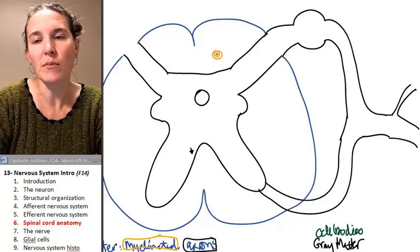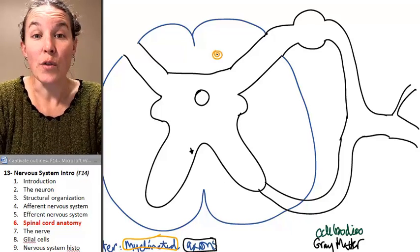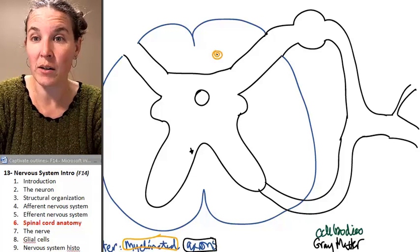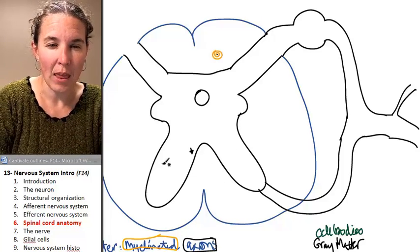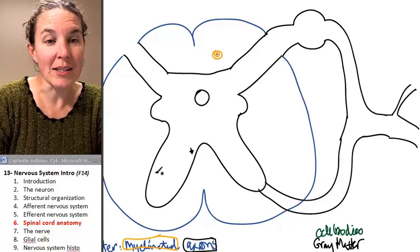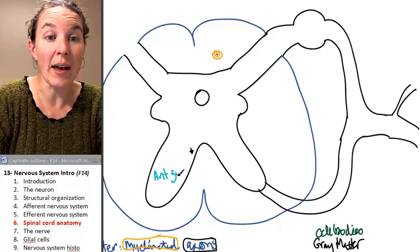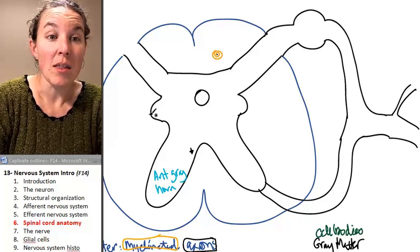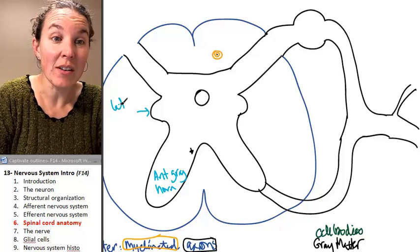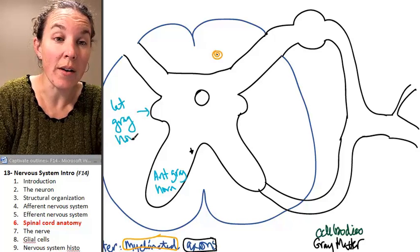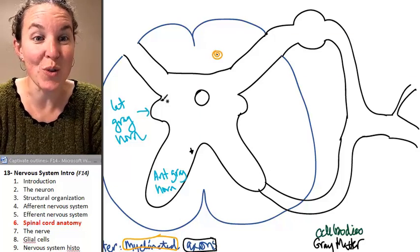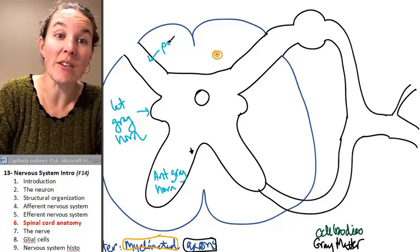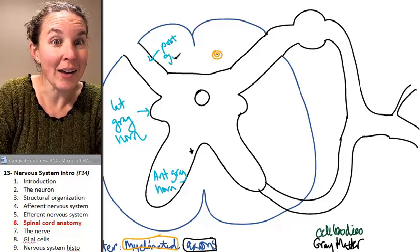Let's label our parts. And then we'll kind of orient ourselves. Let's look at what's going on with the gray matter. I'm going to label them on this side. What a great idea. This is the anterior gray horn. It looks like a horn, doesn't it, or a butterfly wing? This is the lateral gray horn. Some sections of spinal cord do not have a lateral gray horn. This is a posterior gray horn.